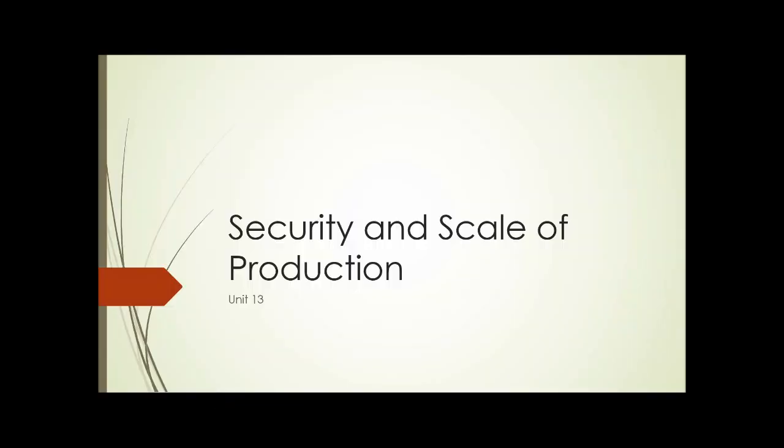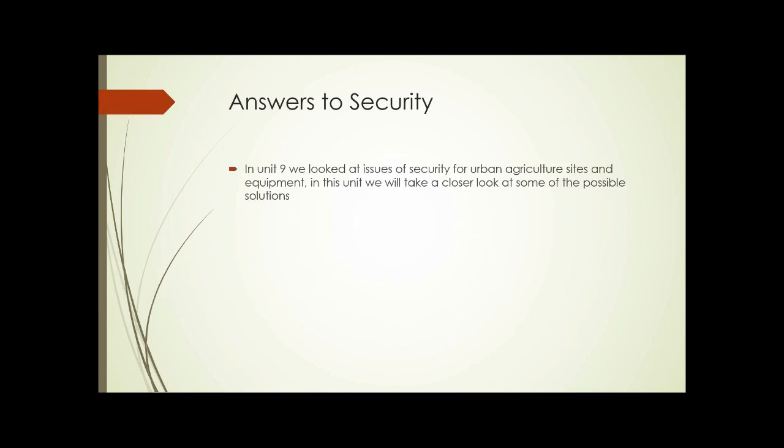Unit 13: Security and Scale of Production. In Unit 9, we looked at issues surrounding security for urban agricultural sites and equipment. In this unit, we'll take a closer look at some of the possible solutions. We also looked at scale of production in Unit 9, and we'll take a further look at that in this unit.